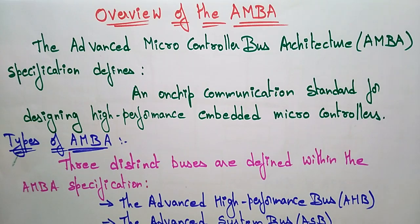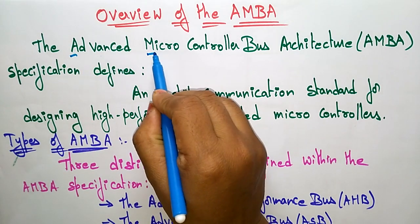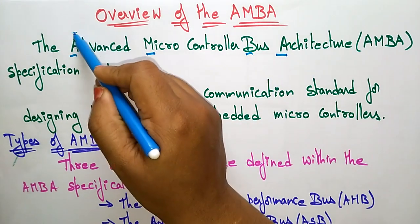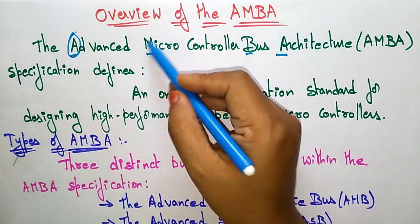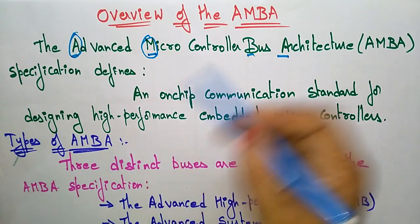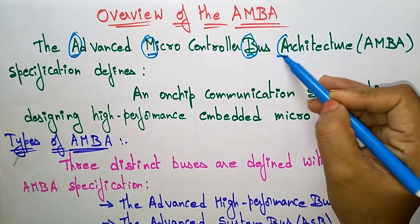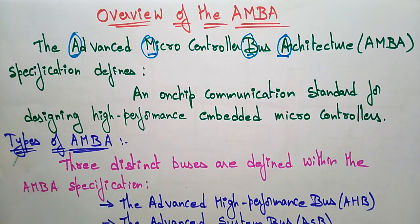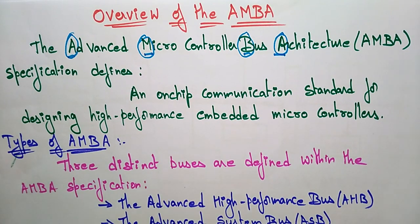Welcome back. Coming to the next topic in the subject Embedded Systems: an overview of AMBA. AMBA is nothing but Advanced Microcontroller Bus Architecture — A for Advanced, M for Microcontroller, B for Bus, and A for Architecture. With the help of this abbreviation, we came to know that we are discussing about bus architecture.